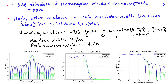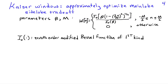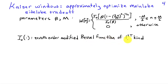With all the different windows available, there's no clear formula to optimize the design, although the one that comes closest is the so-called Kaiser window, chosen to approximately optimize the trade-off between main lobe width—the transition band—and side lobe height, which determines ripple in both the pass band and stop band. The Kaiser window has two parameters: beta and the order parameter M. It is defined in terms of the zeroth-order modified Bessel function of the first kind.